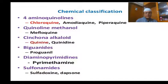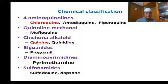Chemical classification: 4-aminoquinolines — chloroquine is the most important drug; others are amodiaquine and piperaquine. Quinoline methanol — mefloquine. Cinchona alkaloids — quinine and quinidine from cinchona bark. Biguanides — proguanil. Diaminopyridines — pyrimethamine. Sulfonamides — sulfadoxine.